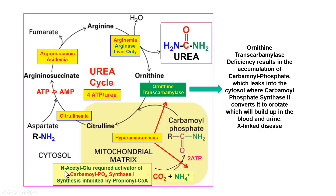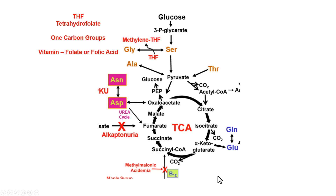Urea contains one amino group from ammonia plus CO2, and another from aspartate. CPS1 is different from CPS2 in the cytosol because it has an absolute requirement for N-acetylglutamate as an activator. If propionyl-CoA accumulates — from amino acid metabolism or odd-chain fatty acid degradation — it can inhibit the reaction that makes N-acetylglutamate, causing similar problems in the urea cycle.